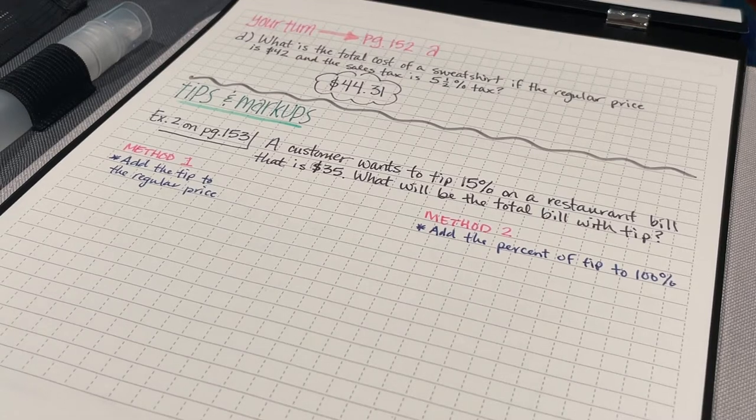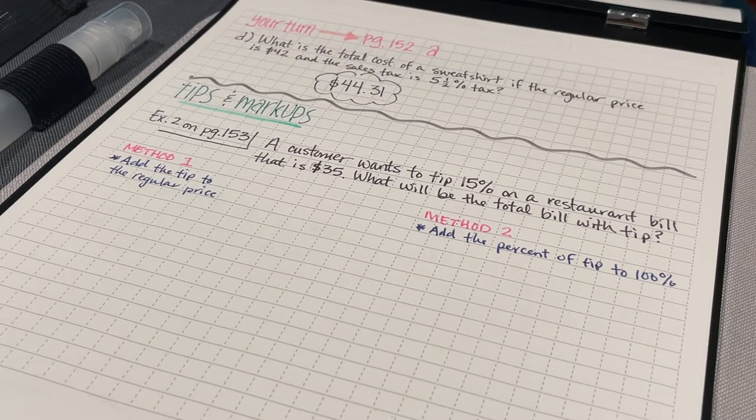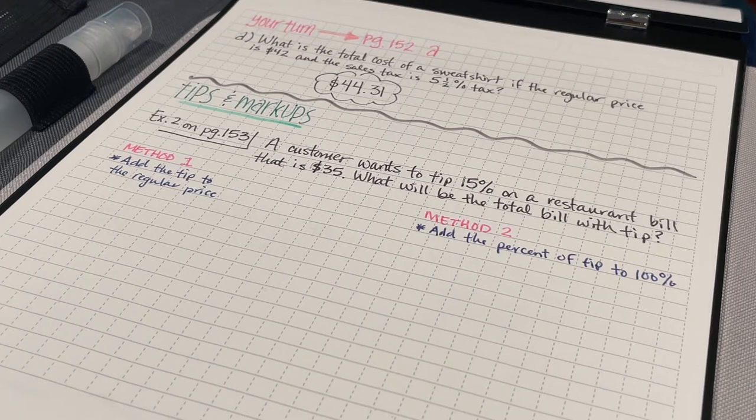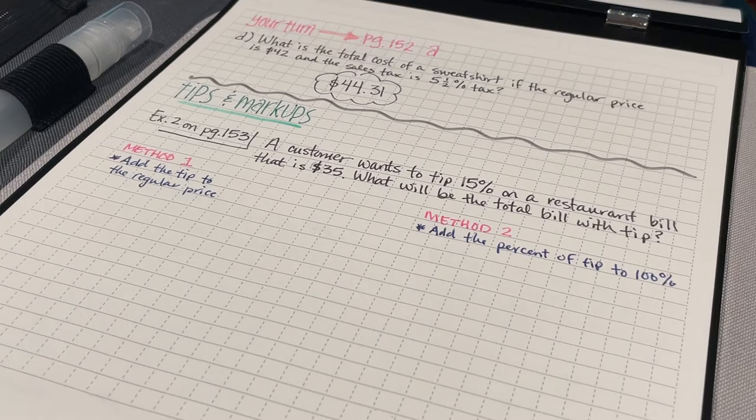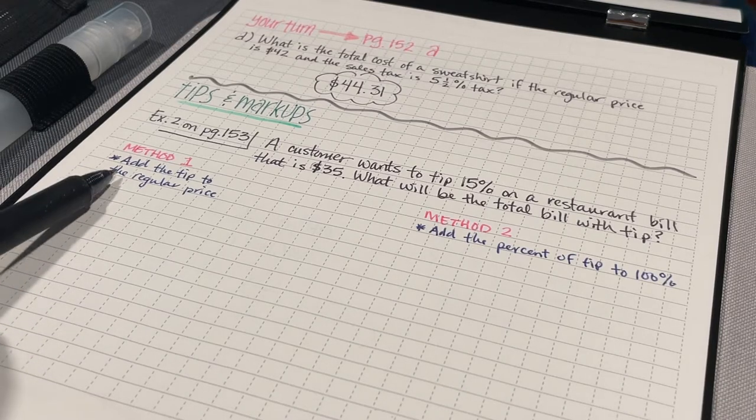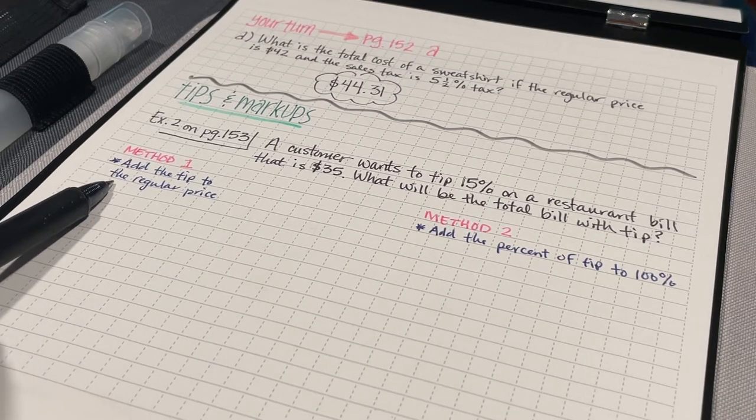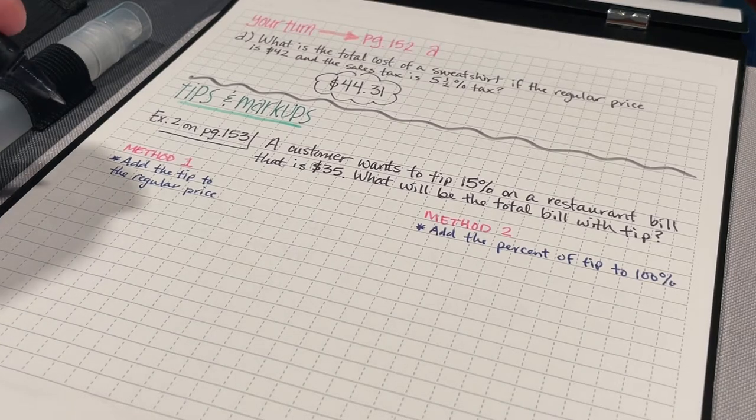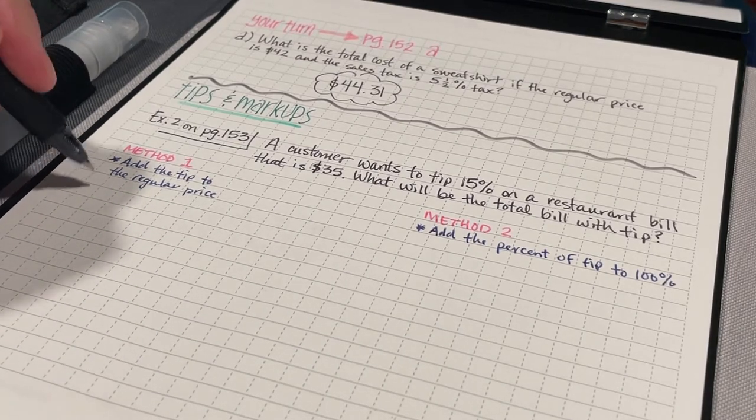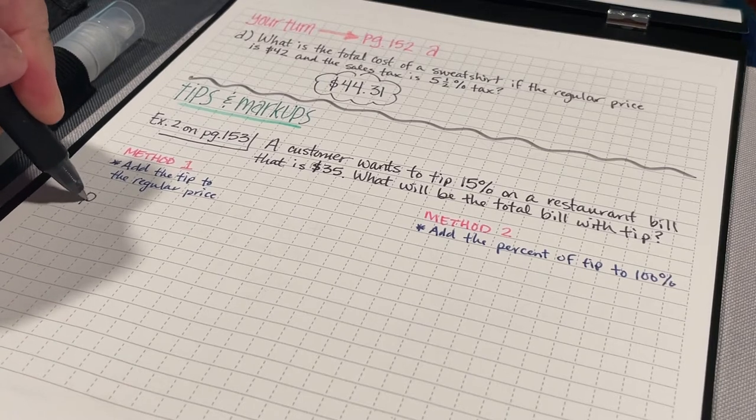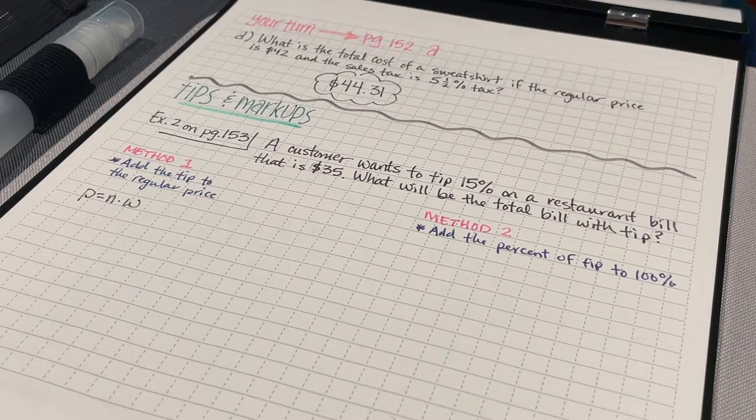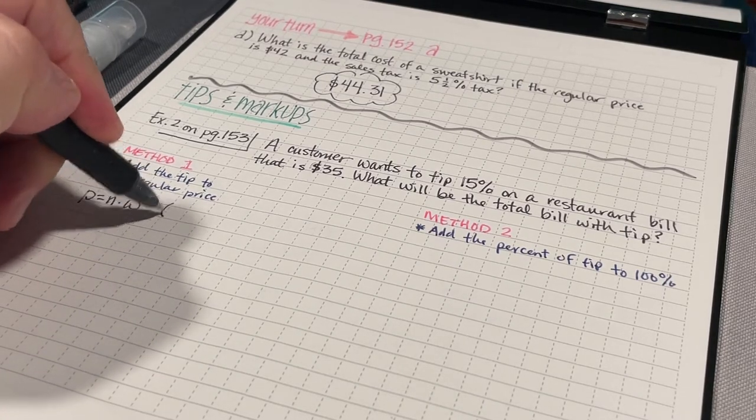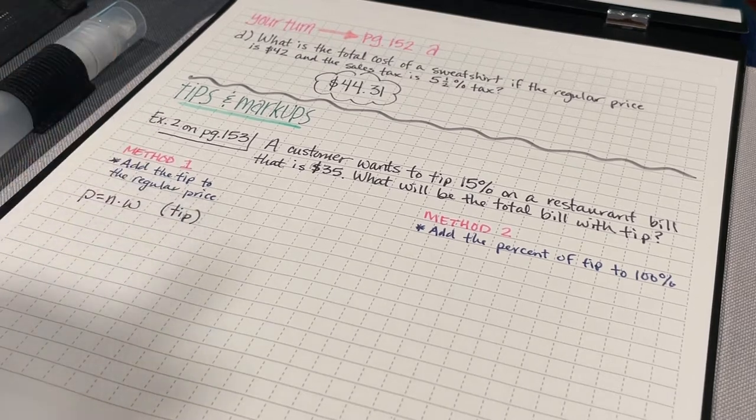In example two on page 153, we have a customer that wants to tip 15% on a restaurant bill that is $35. We want to find out what's the total bill with the tip. Just like in the previous example, let's take a look at two different methods. The first method, we're going to add the tip to the regular price. I'm going to use this same percent equation. Part equals N times W. This part is going to give me the tip.